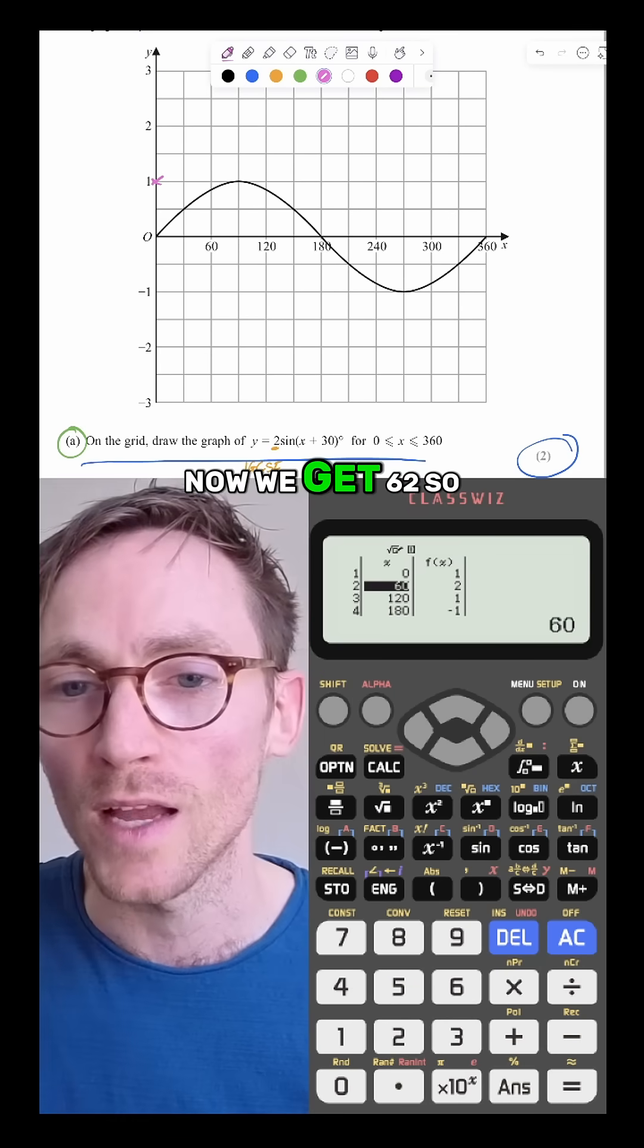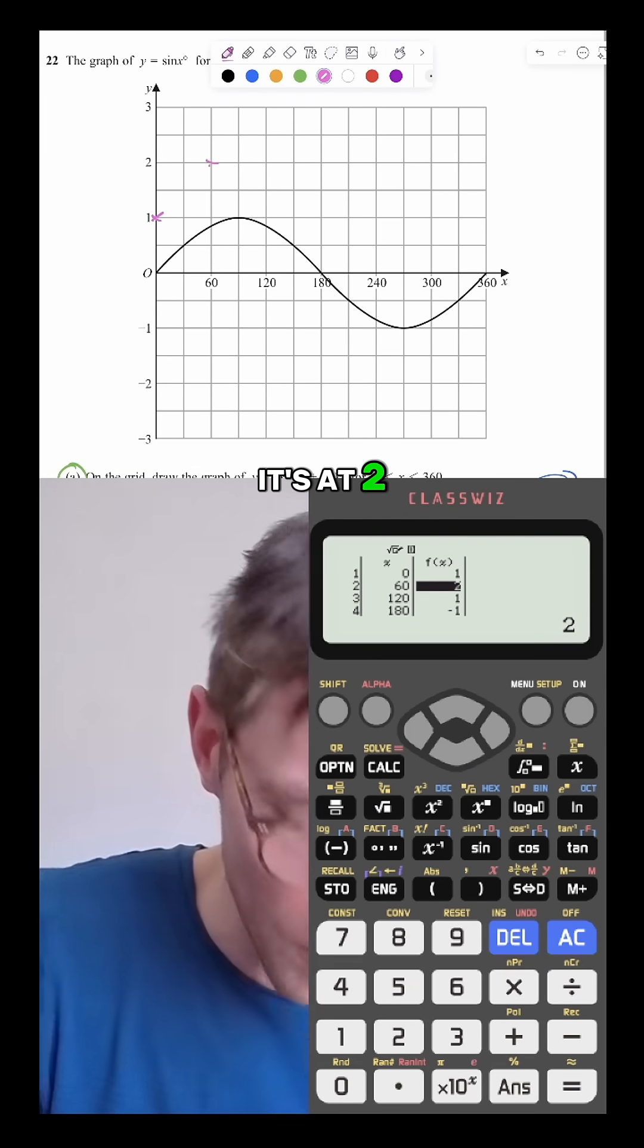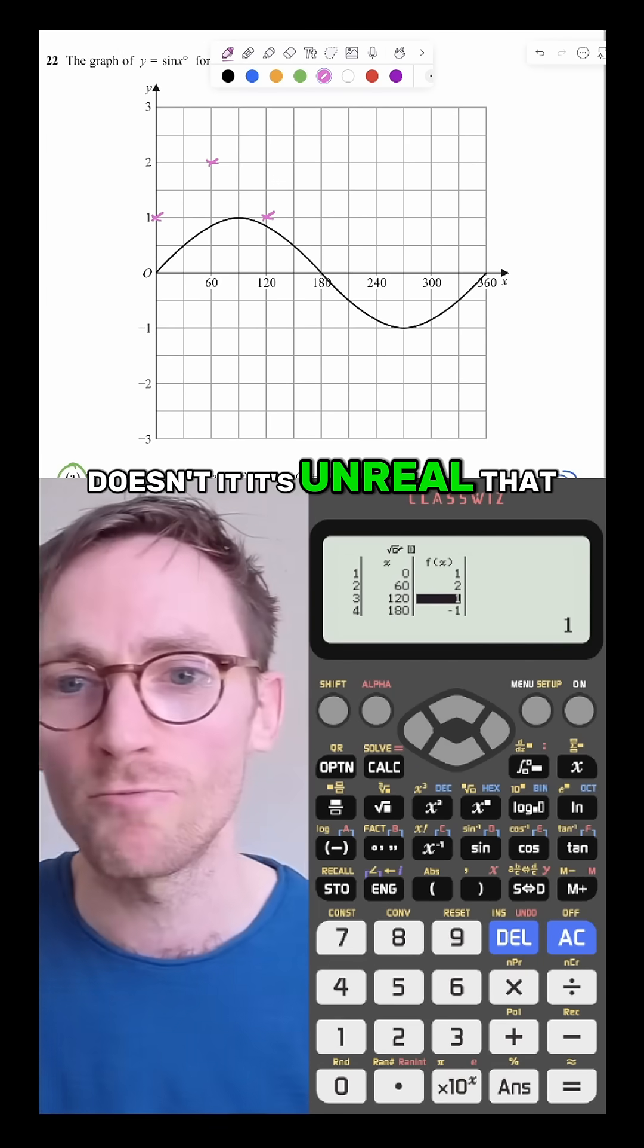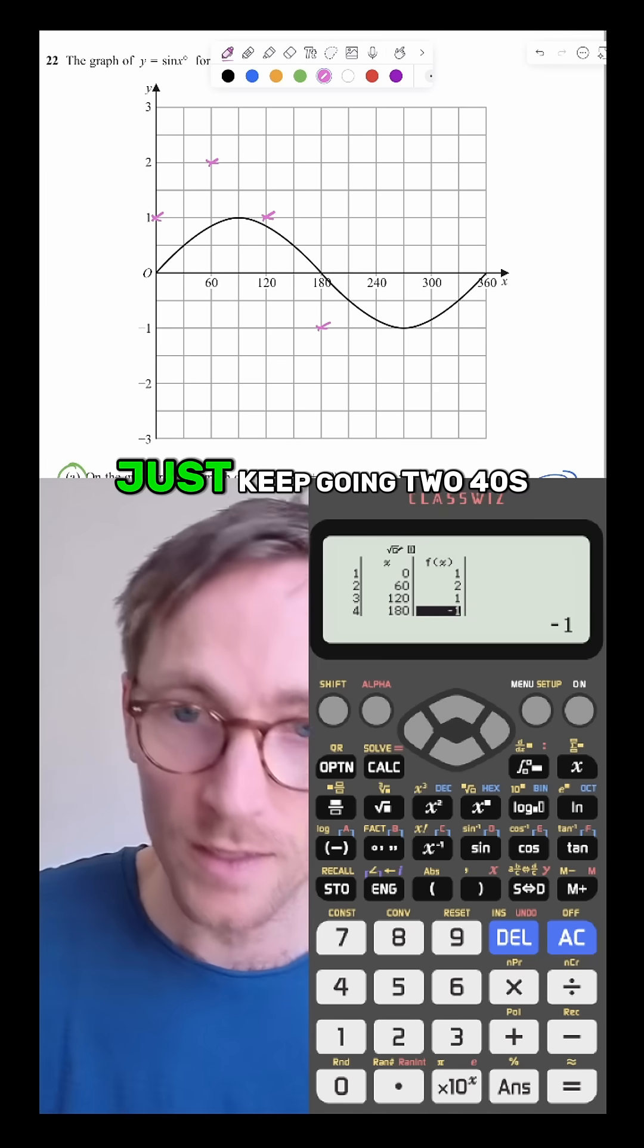Now we get 60, 2. So we go to 60, it's at 2. Then at 120, it's 1. This feels like a cheat, doesn't it? It's unreal that you're allowed to do this. 180 is minus 1. Okay, you just keep going.